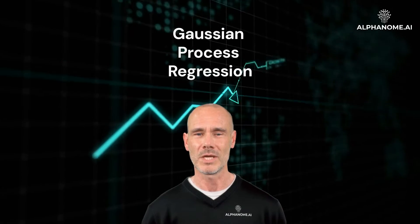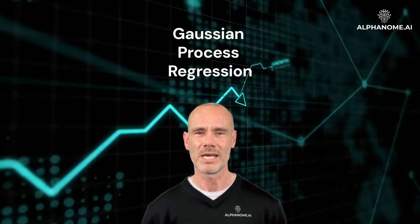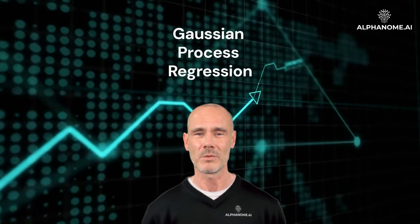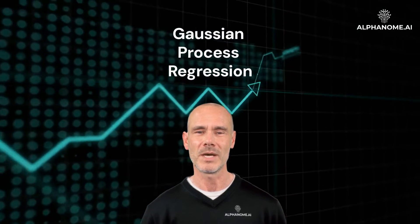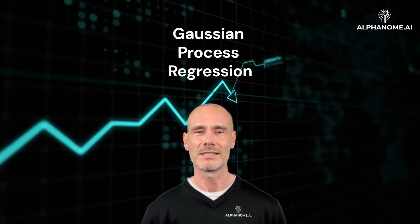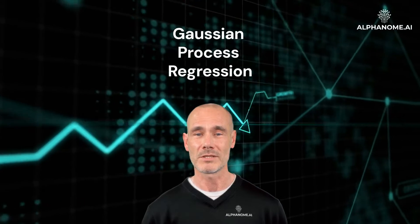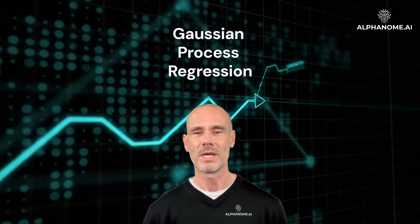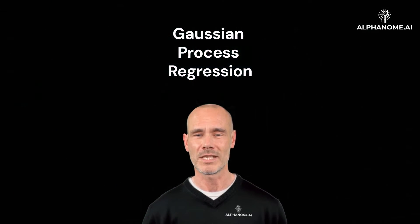Gaussian Process Regression: a powerful machine learning tool for investment forecasting. Investors are constantly seeking reliable methods to analyze historical data and make informed predictions about future market trends. One machine learning technique that has gained significant traction in recent years is Gaussian Process Regression, GPR — a powerful tool offering a flexible and robust approach to forecasting, making it an invaluable asset for investors.